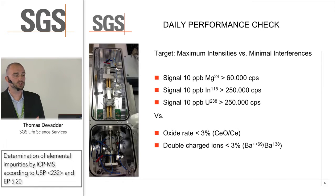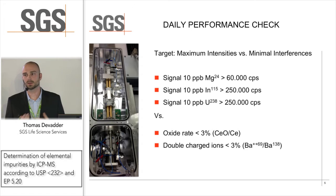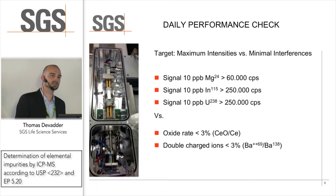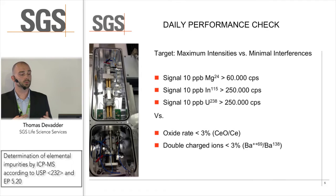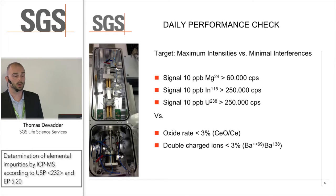First of all, we have to show that our instrument is in good condition. In a daily performance check we like to show the maximum signal for our analytes and on the other hand the minimal level of interferences. We track the oxide interference, which comes automatically from our sample solution, and we track double charged ions. For that we choose cerium and barium, because these two elements form this kind of interference most readily.